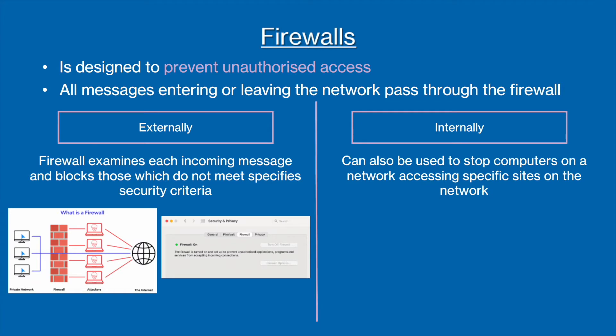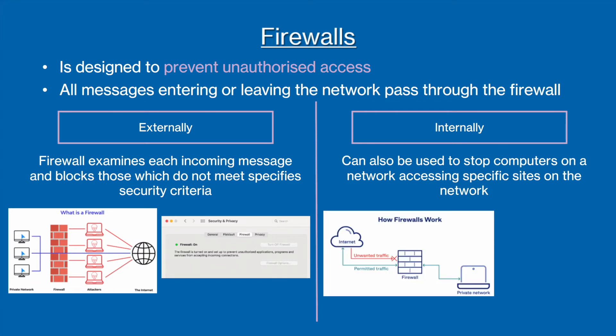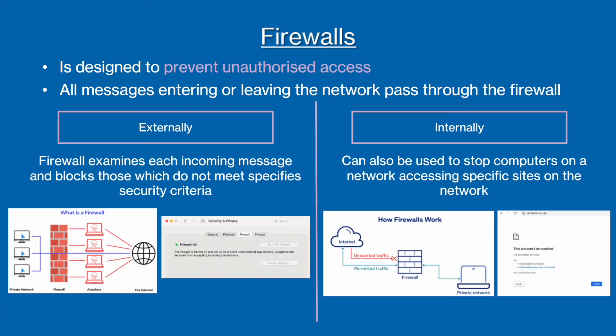The second use case is to block users from accessing certain websites deemed dangerous or distracting. You might have seen this form of firewall in school. For example, if you try and go on a distracting website like Amazon, you may get a 'site cannot be reached' error. This is your school's firewall blocking access to the Amazon website.